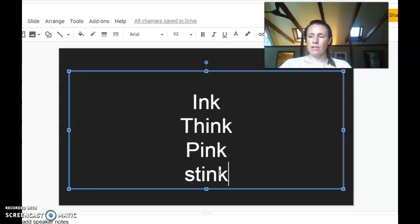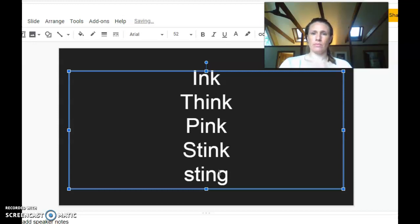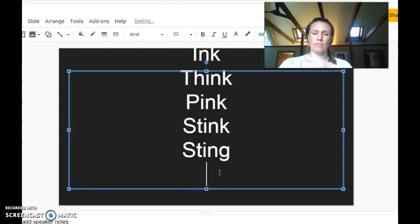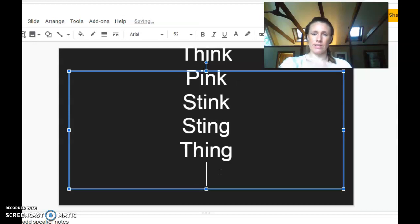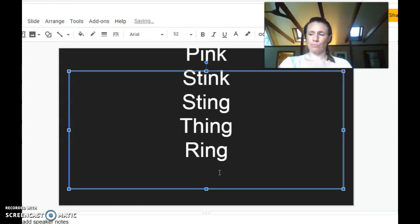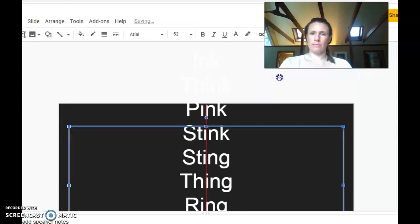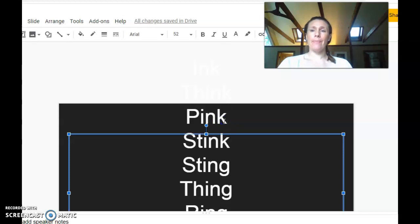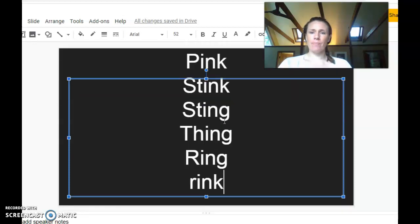Change stink to sting. Listen to the ending. Change sting to thing. Think about what parts stay and what parts change from sting to thing. Good. Change thing to ring. That's right. I still hear ing, so I'm just changing the beginning. And one more. Let's change ring to rink.